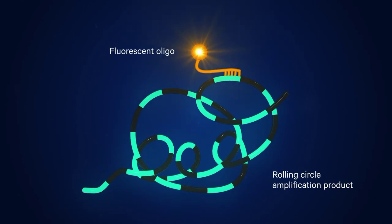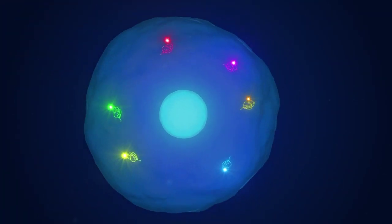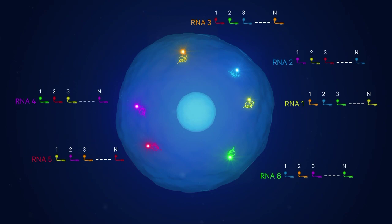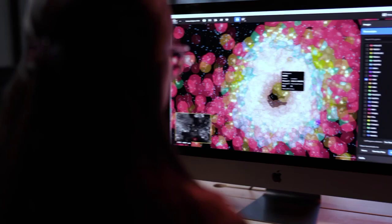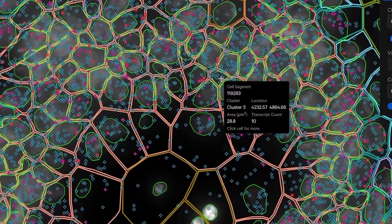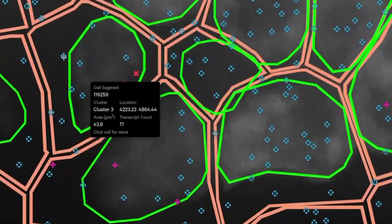We introduce barcodes into the sample that tag all of these different genes, and we read out those barcode sequences through an iterative imaging and hybridization cycle. We can decode these and a researcher can see hundreds of transcripts within the cell and the subcellular resolution of where those transcripts are located.